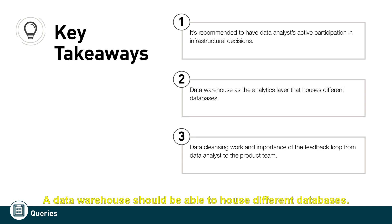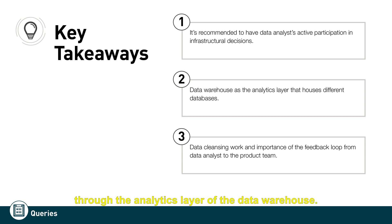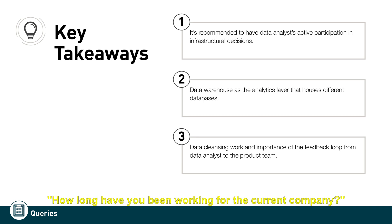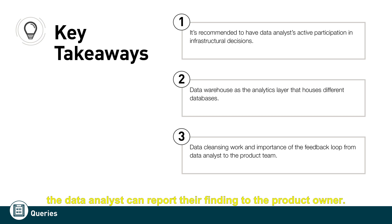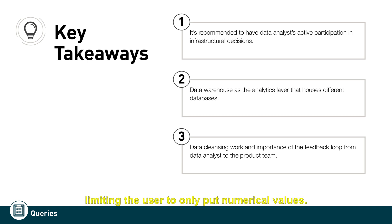A data warehouse should be able to house different databases — for example, a call banking system, card management system, and mobile application data — all accessible through the analytics layer of the data warehouse. It is also important to establish a feedback loop between the data team and the product team. For example, when a data column is extremely messy, the data analyst can report the finding to the product owner, who can then recommend the development team to change the input type to numerical only, limiting users to only numerical values.